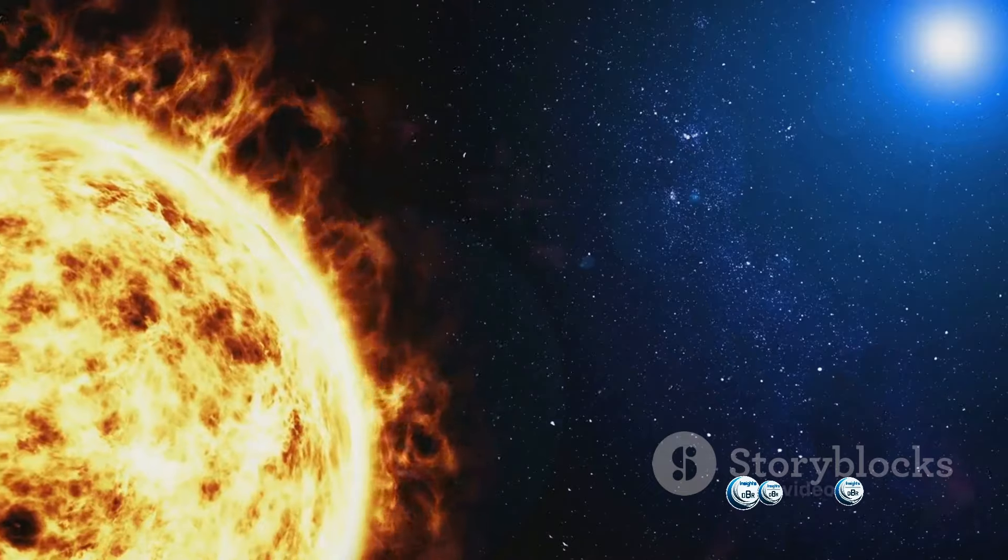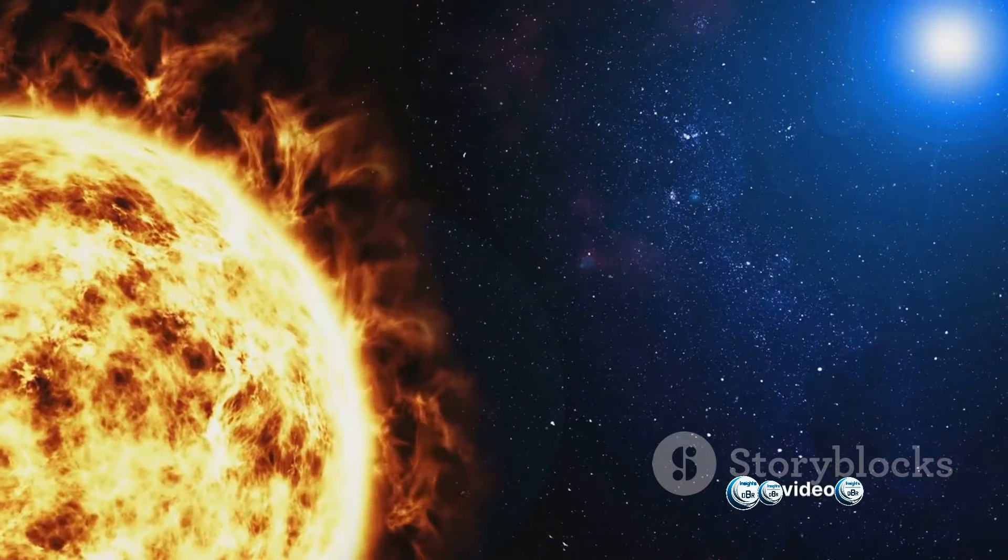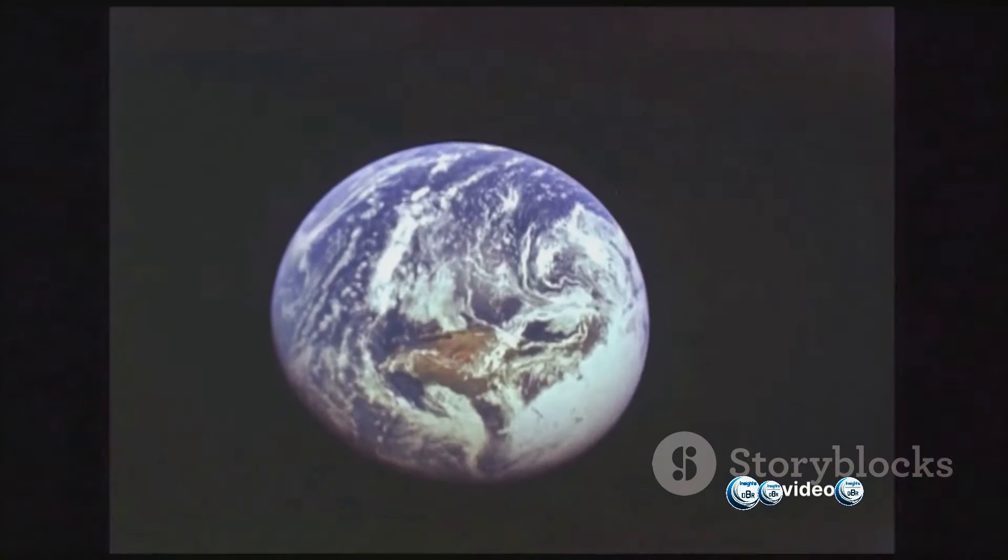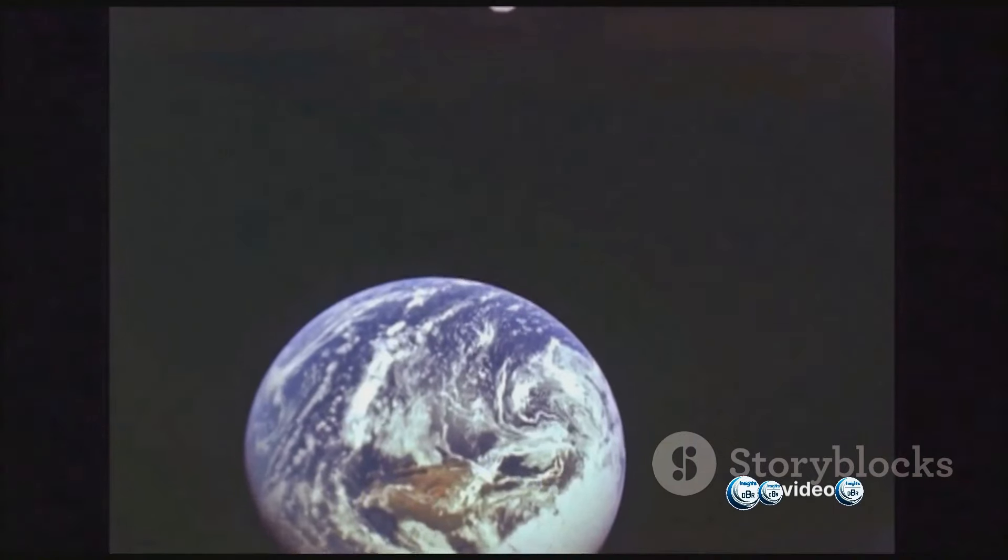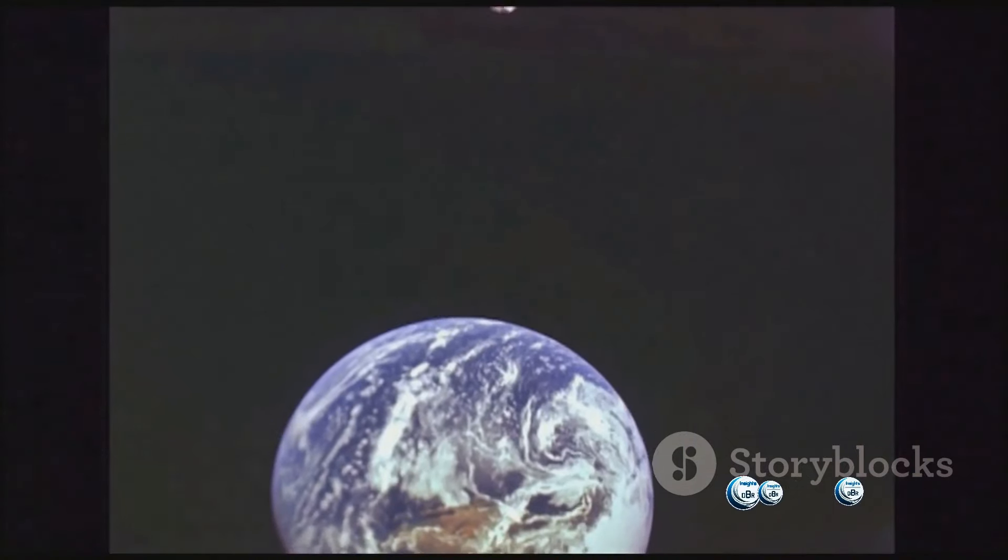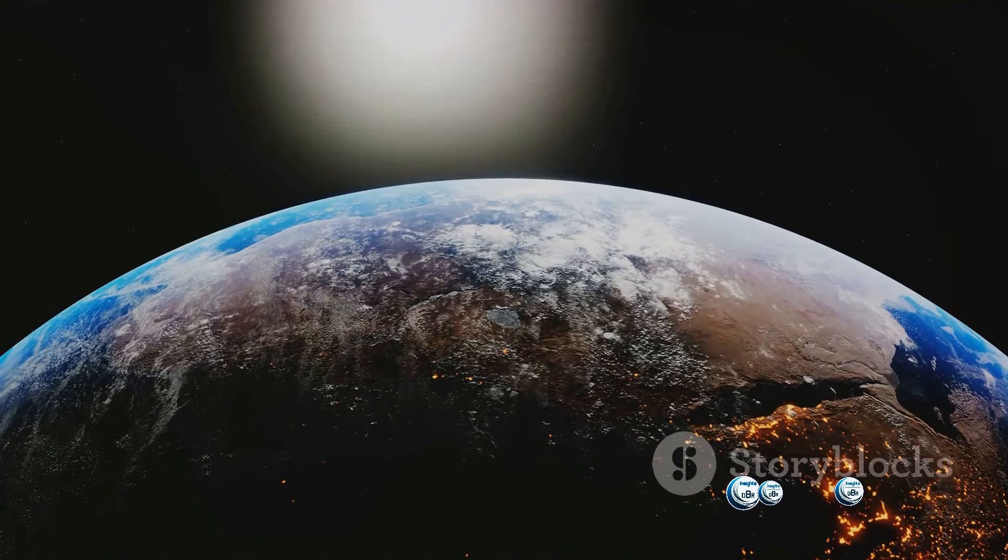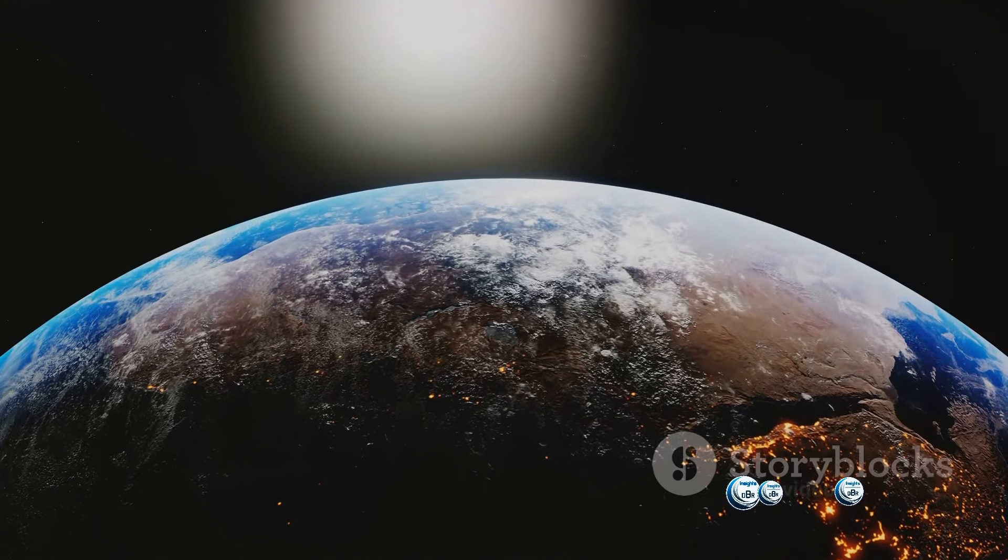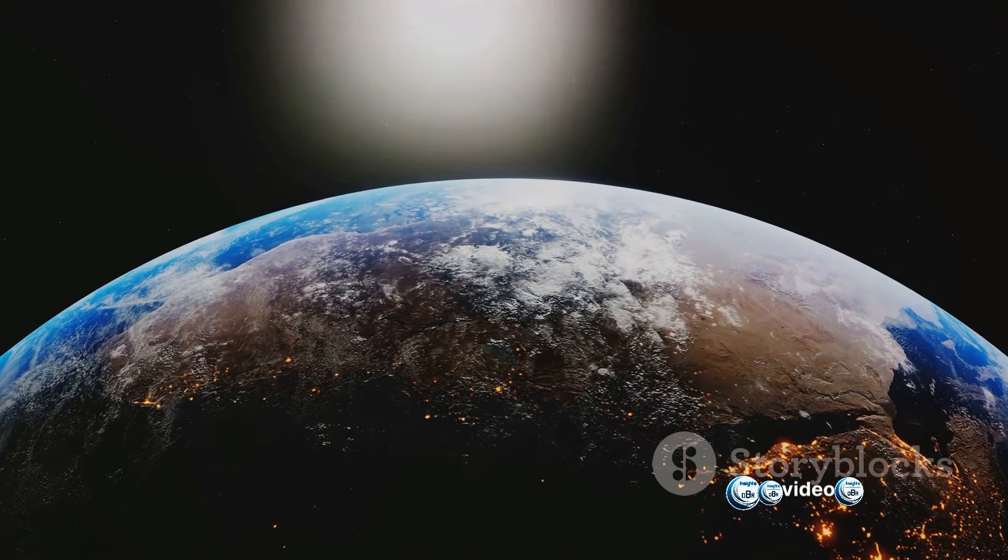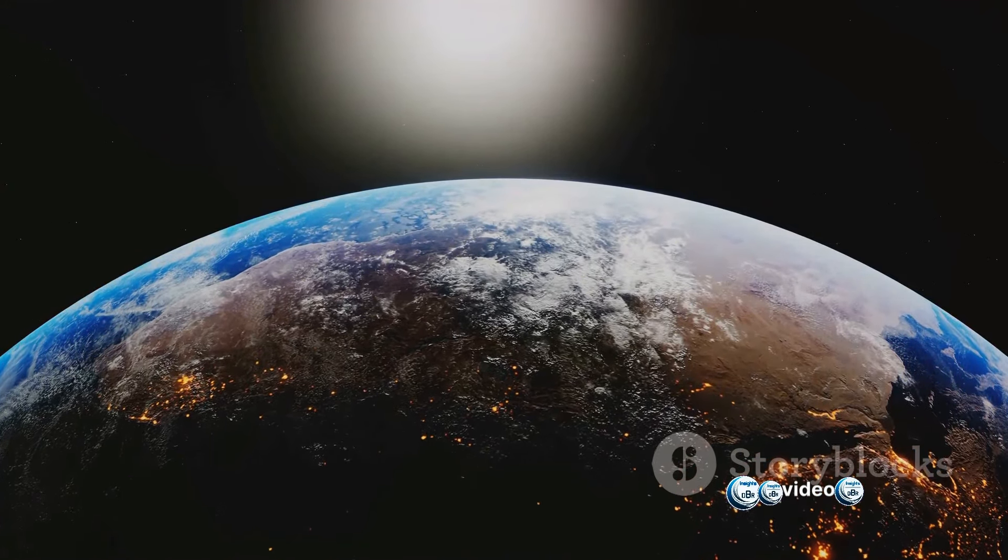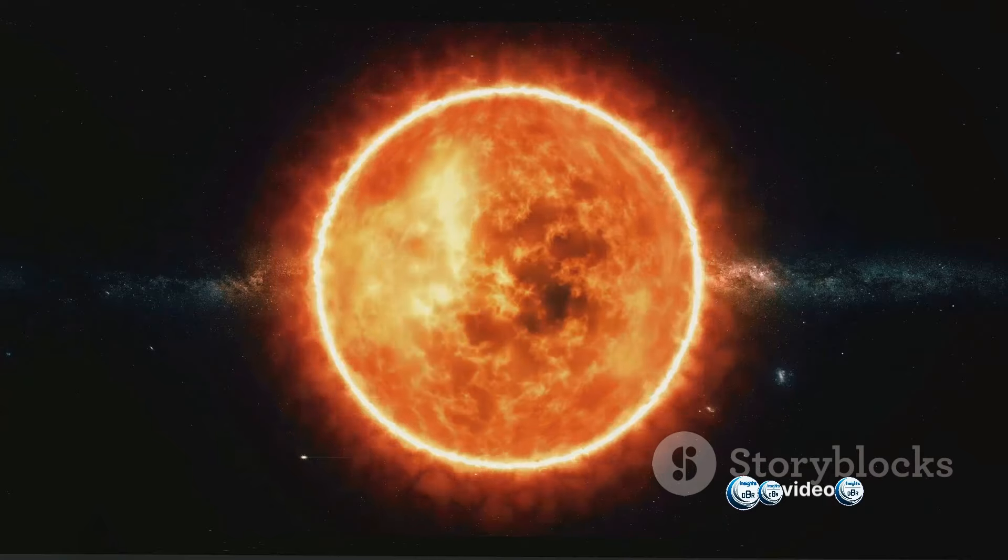The exact fate of our planet is uncertain but it's possible that Earth might be swallowed by the Sun or pushed out into a wider orbit. In the face of such a fiery future, it's easy to feel daunted. But it's important to remember that these changes will happen over an incredibly long timescale. We're talking about hundreds of millions, even billions of years. That's longer than the entire history of complex life on Earth.